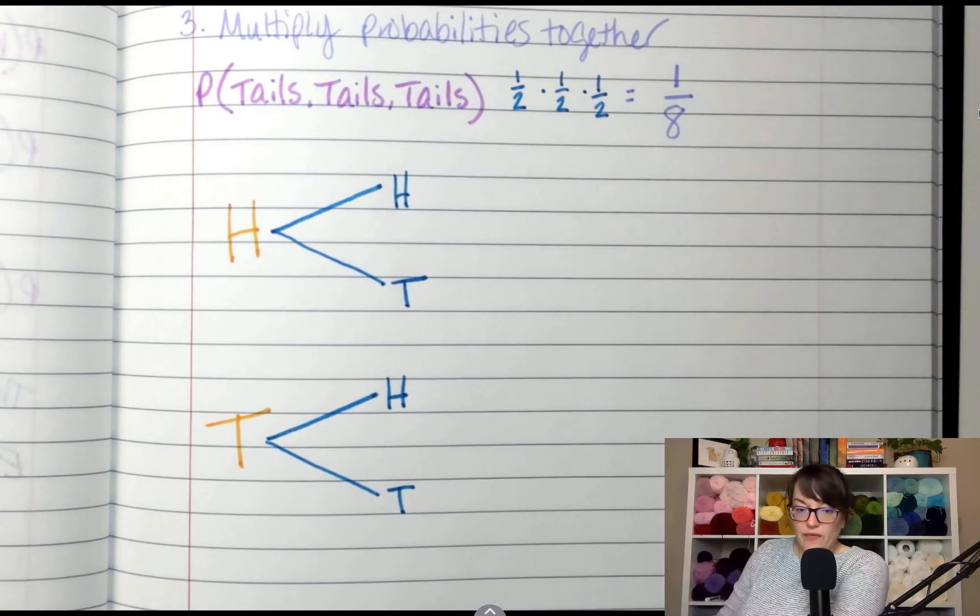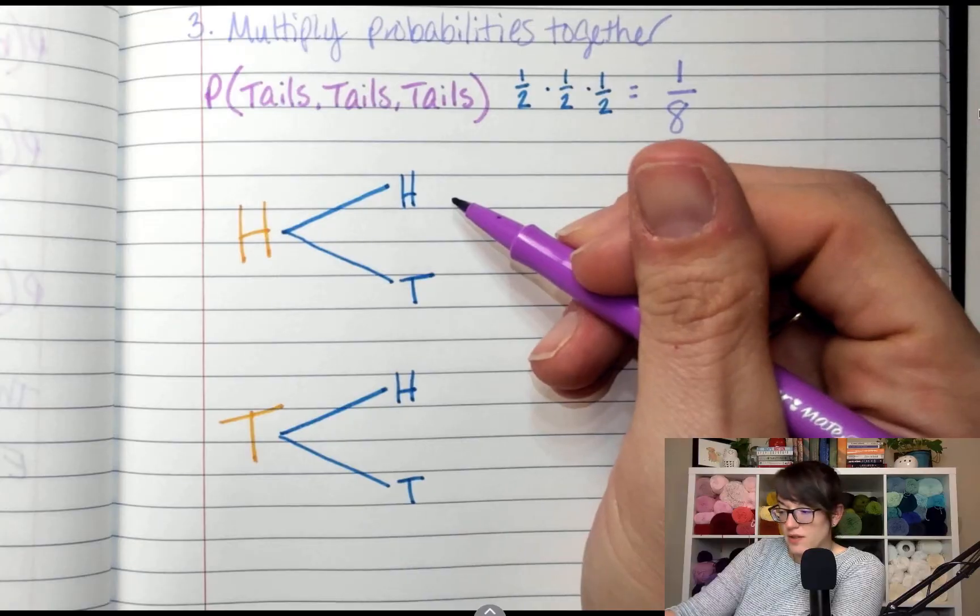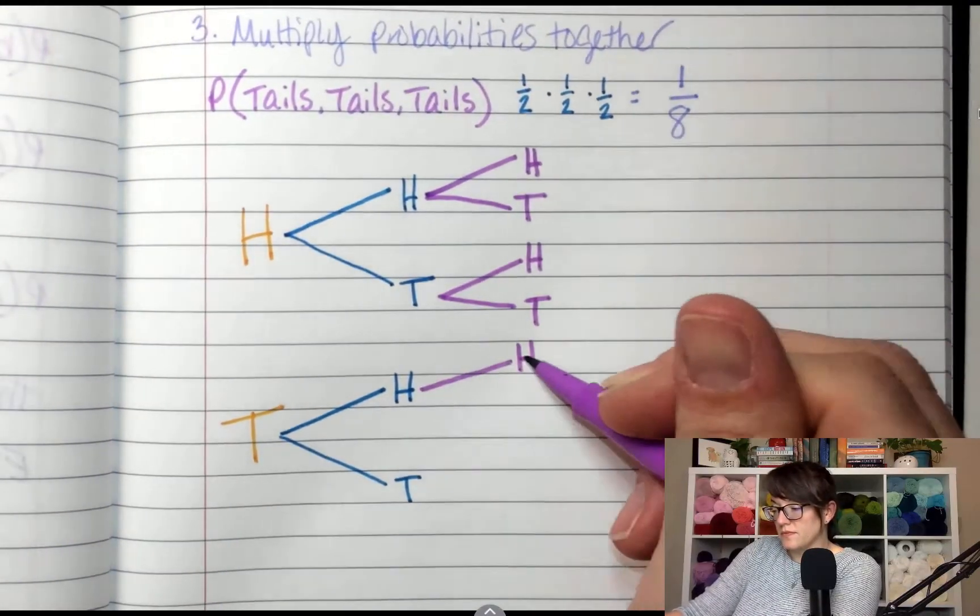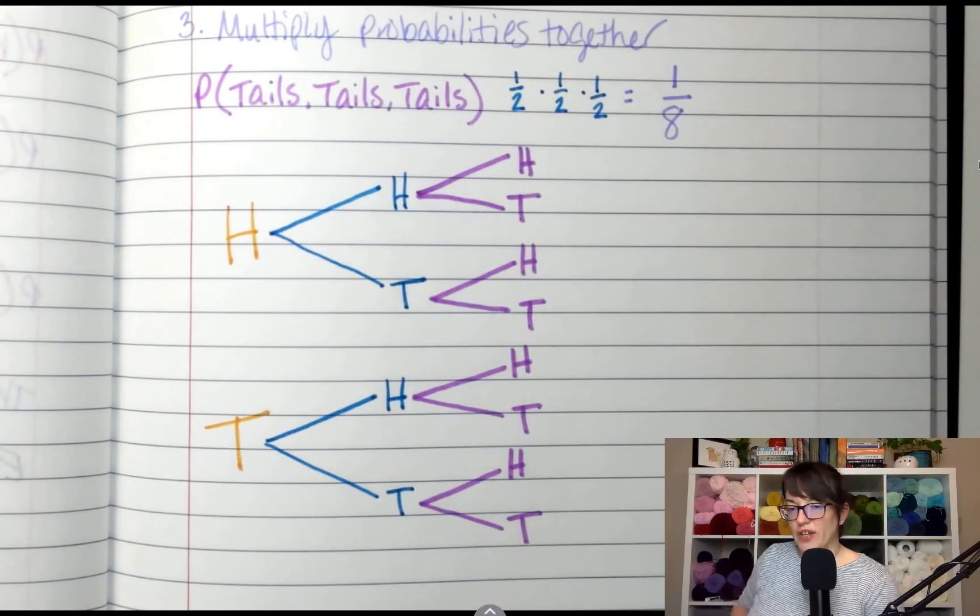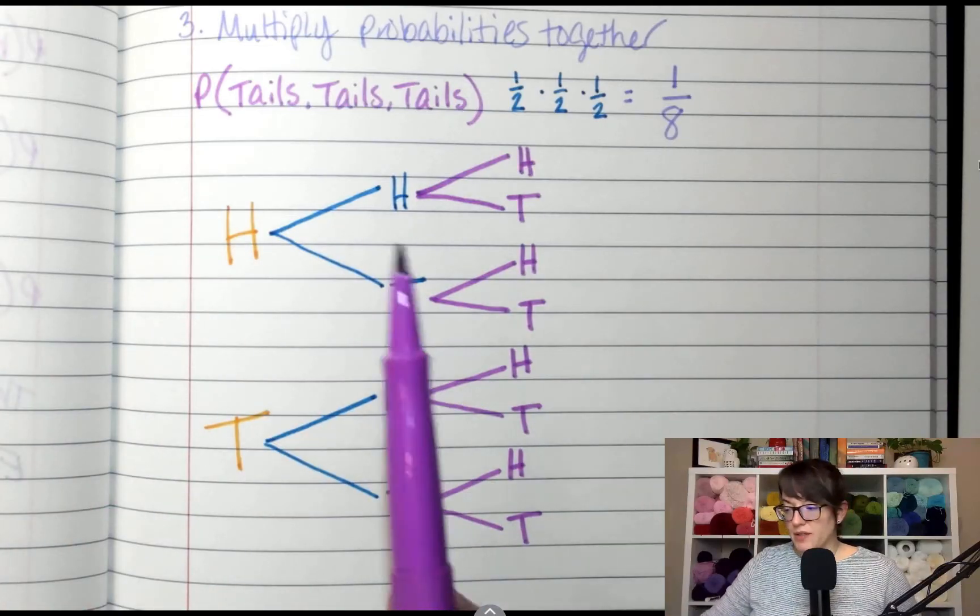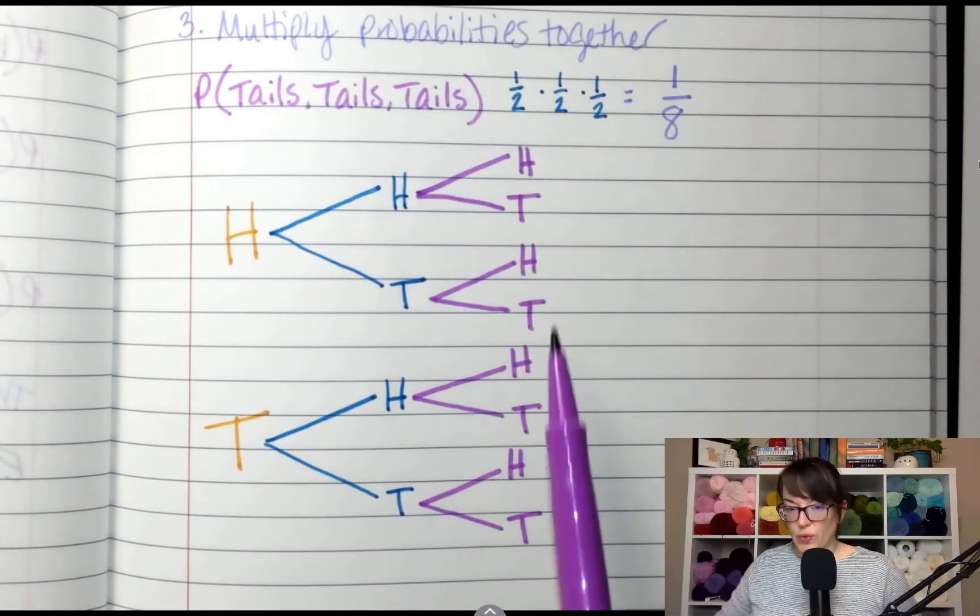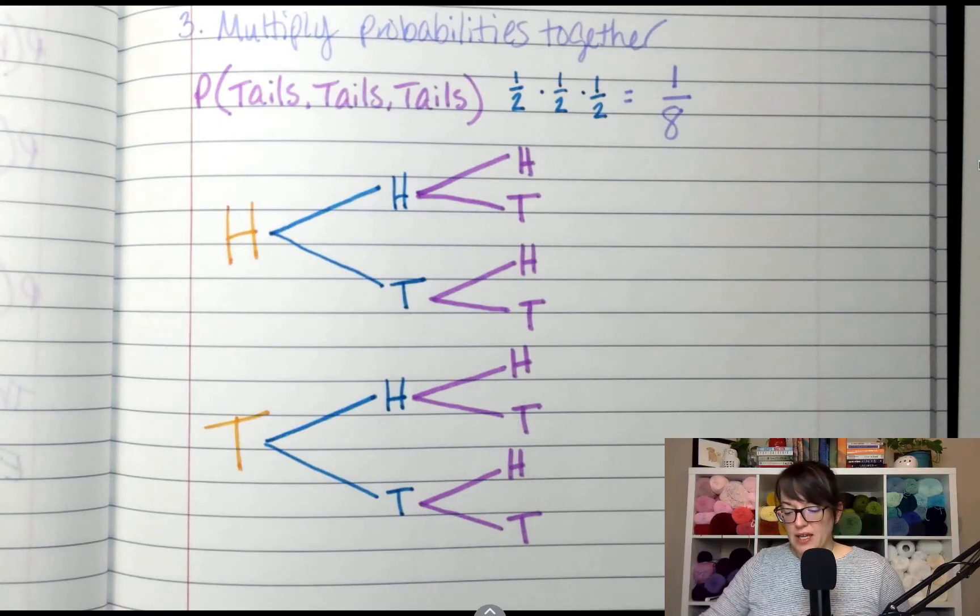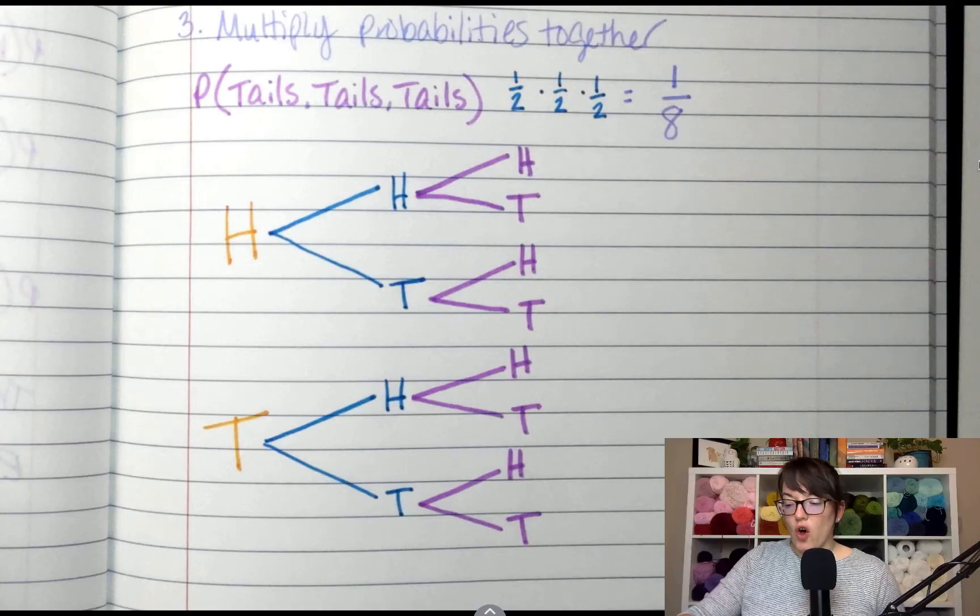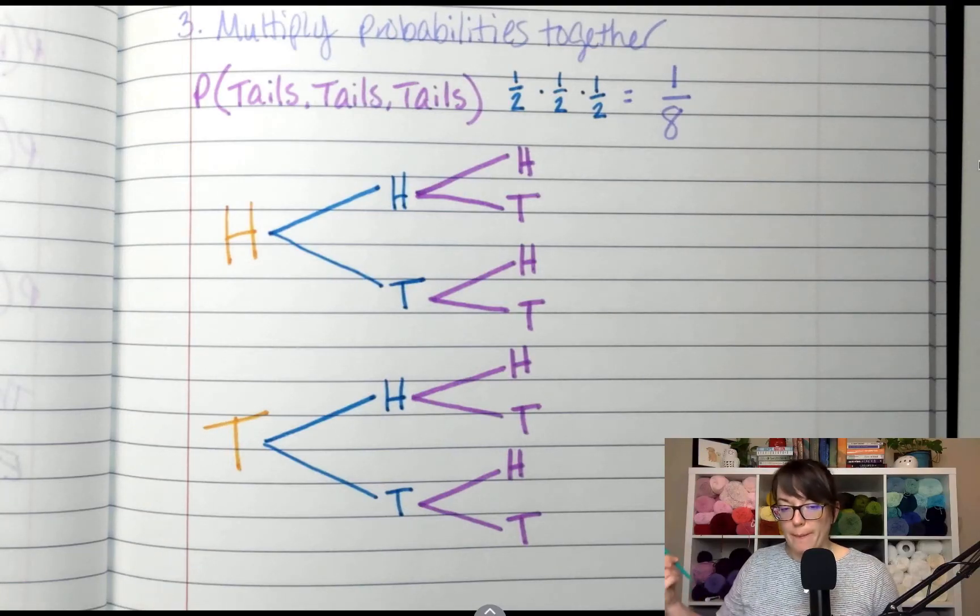So after I flip the coin again, I could get heads or tails. All right. Once we flip the coin three times, we've got one, two, three coin flips. If I follow the lines, it will show me all of my possible combinations.